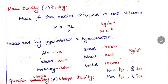The next property is mass density, simply called density, denoted by rho. It is defined as the mass of matter occupied in a unit volume, so the formula is mass divided by volume. The unit is kilogram per meter cube, and the dimensional unit is M L⁻³, where M denotes kilogram and L denotes meter. This is commonly asked in objective questions.